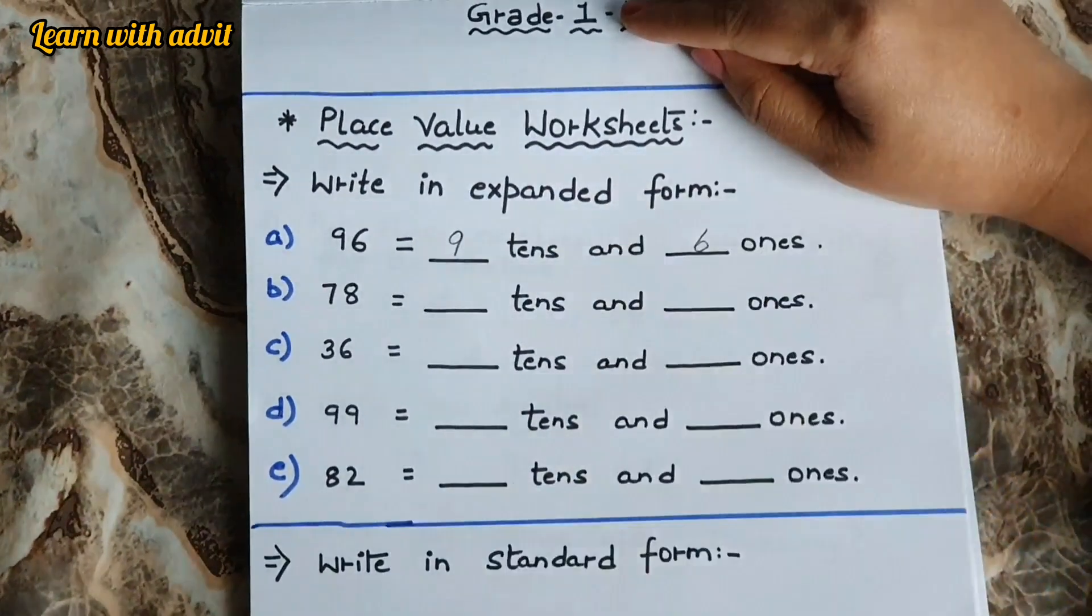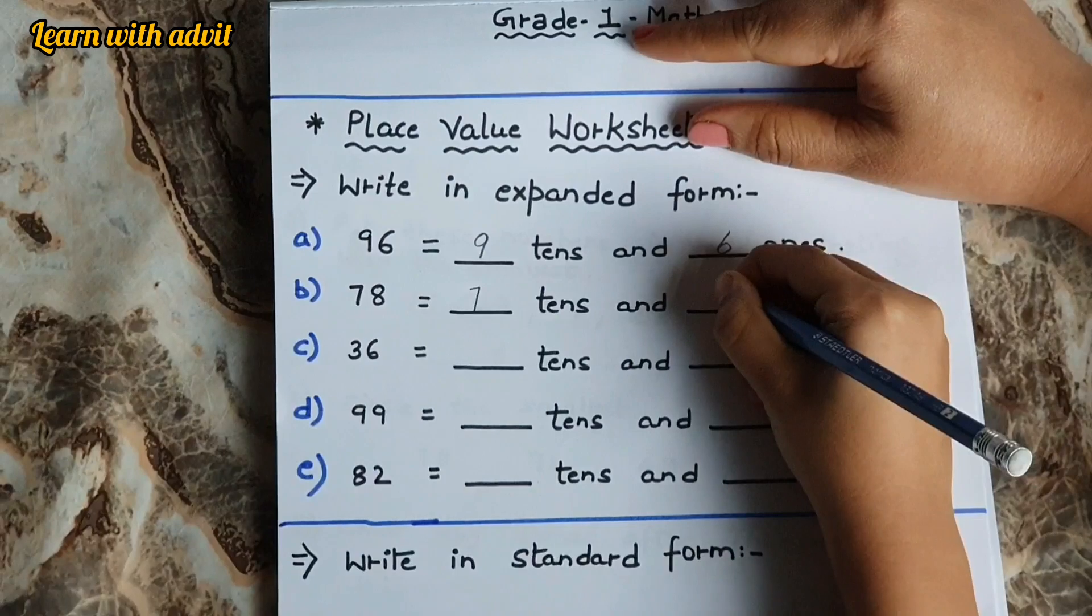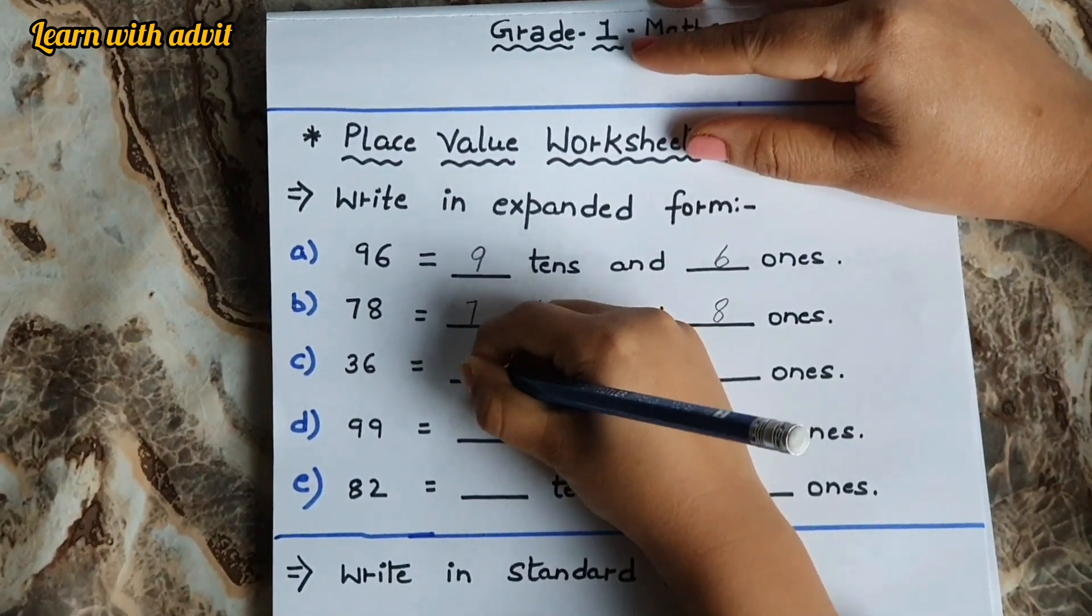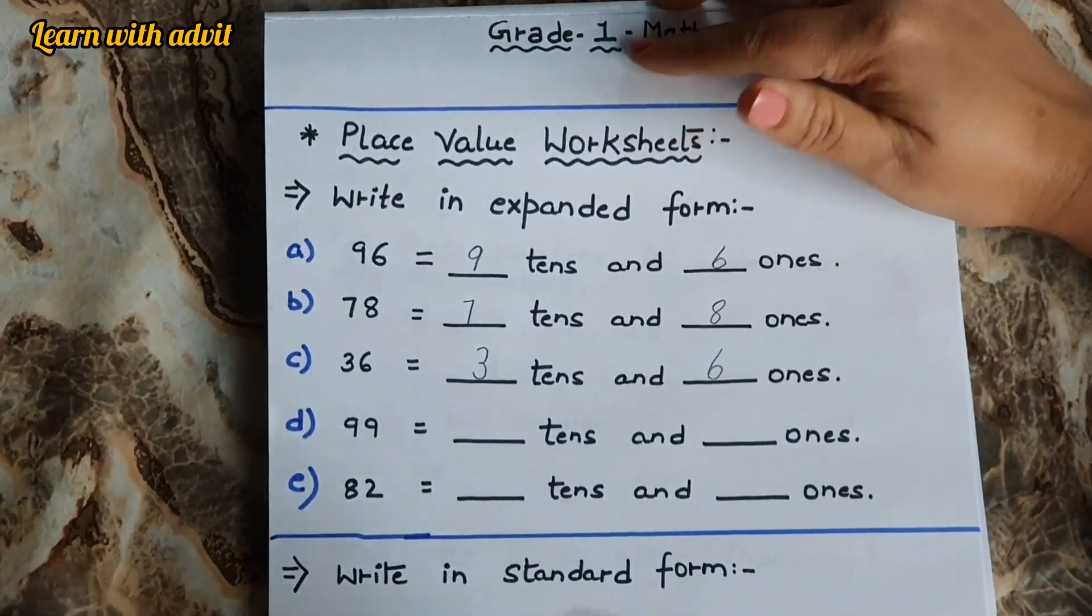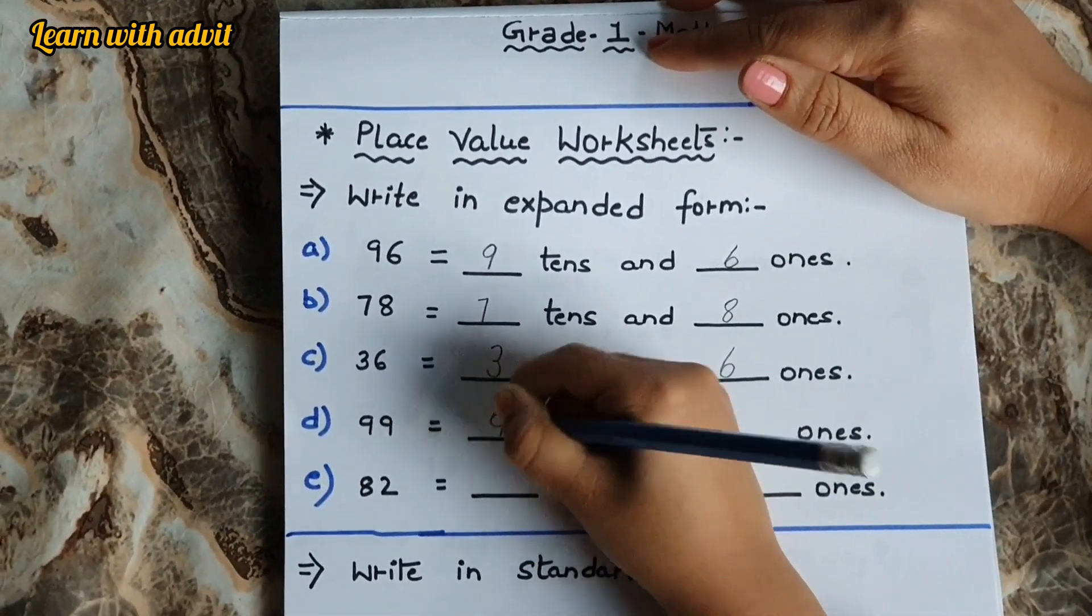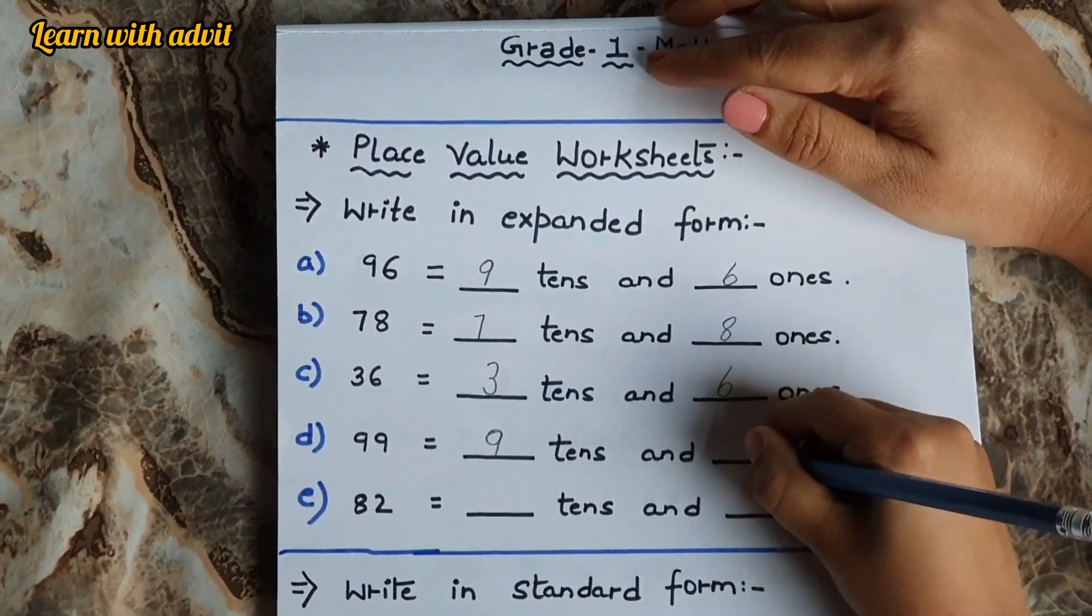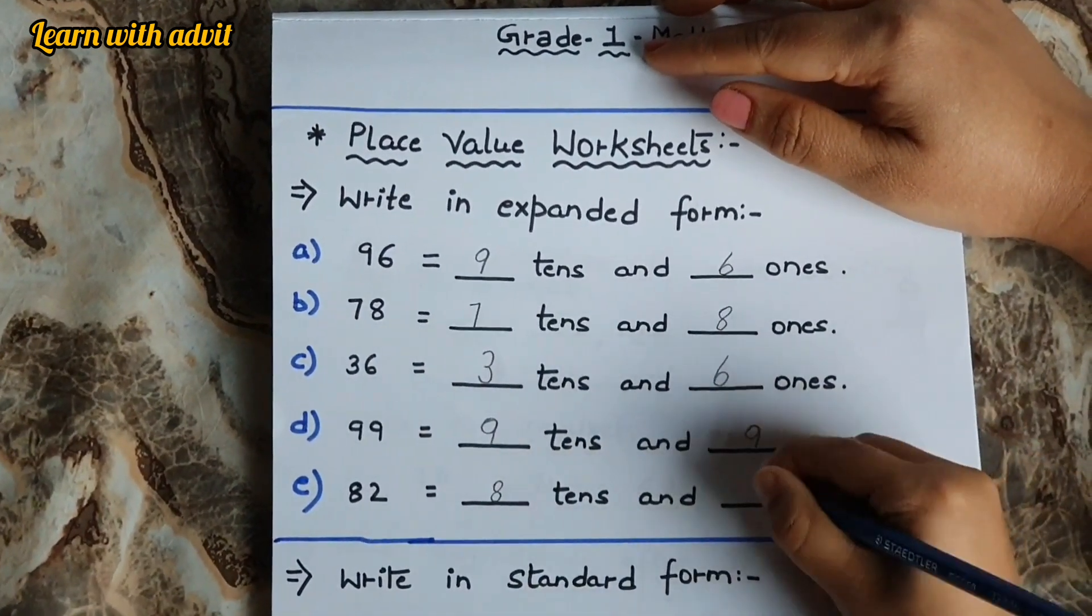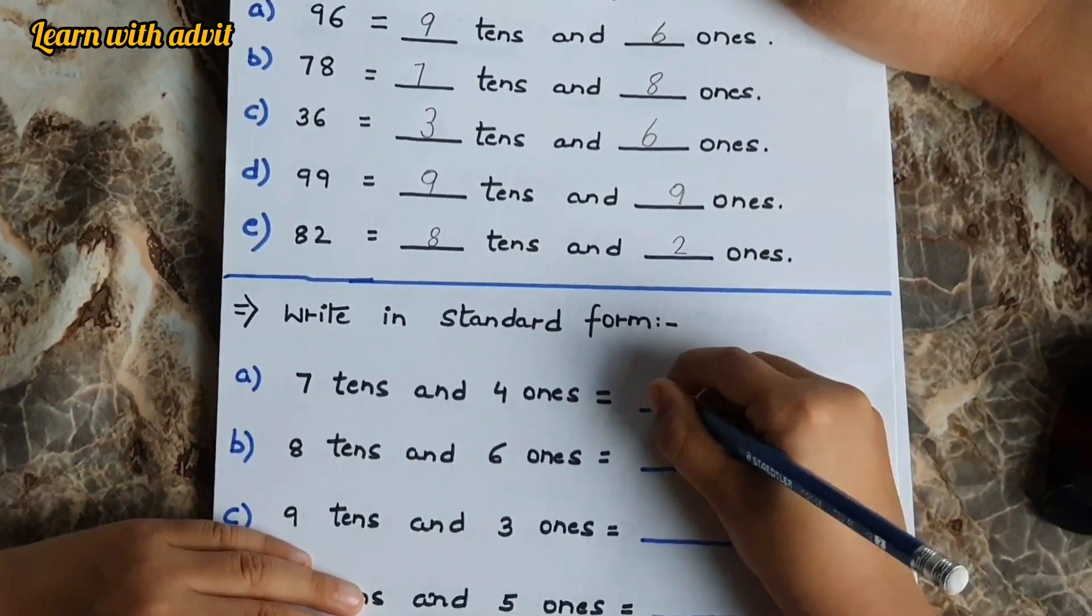Ninety-six has nine tens and six ones. Seventy-eight - seven tens and eight ones. Thirty-six has three tens and six ones. Ninety-nine has nine tens and nine ones. Eighty-two has eight tens and two ones.